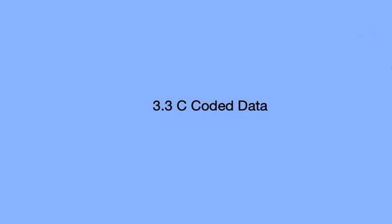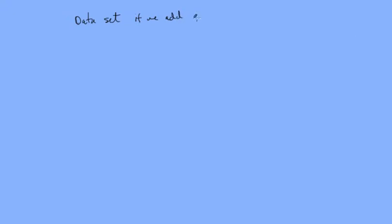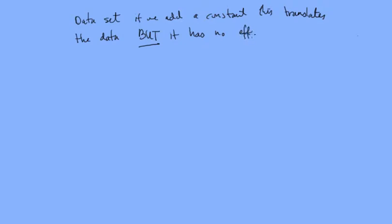Today we're going to be looking at coded data and how it affects variance and standard deviation. If we add a constant to a data set, this translates the data set, but it has no effect on the spread — i.e. the variance.